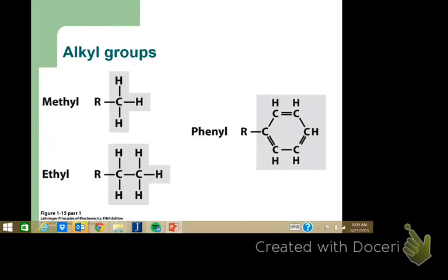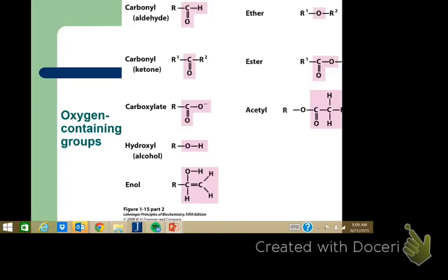We have the alkyl groups, then those containing oxygens. The carbonyl group is this C double-bonded to oxygen. In organic chemistry, when the carbon has only one other carbon-containing group, it's called an aldehyde. If it has two carbon groups, it's called a ketone.